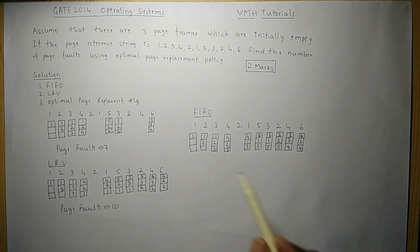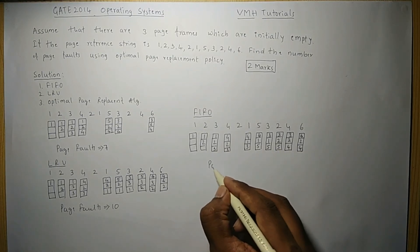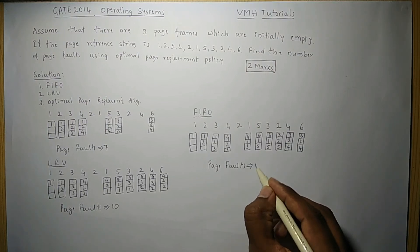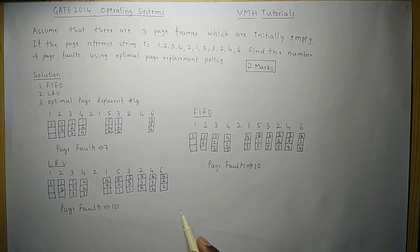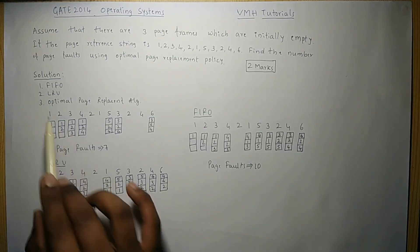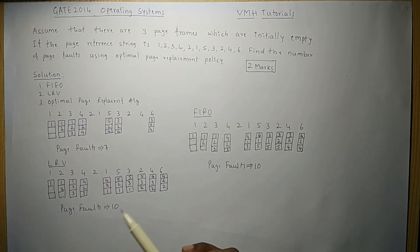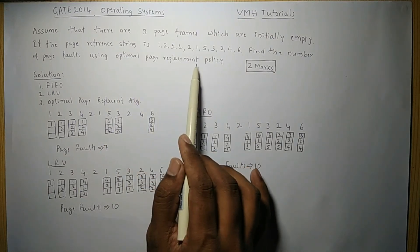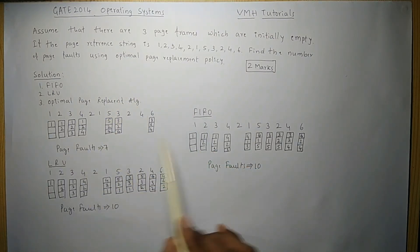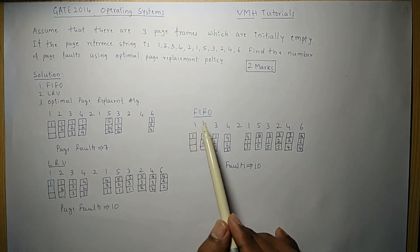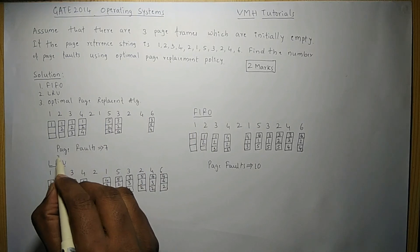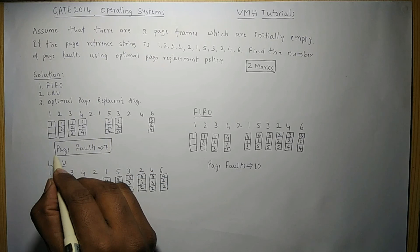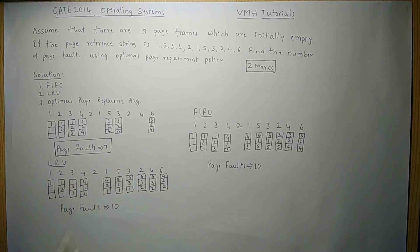Counting all page faults using FIFO: 1, 2, 3, 4, 5, 6, 7, 8, 9, 10 — we again get ten page faults. Both LRU and FIFO give 10 page faults, while the optimal page replacement algorithm gives only 7 page faults. The problem asked us to solve only with the optimal policy, but for practice we also solved using LRU and FIFO. The final answer is 7 page faults using the optimal page replacement policy.